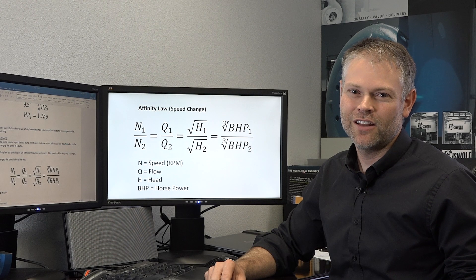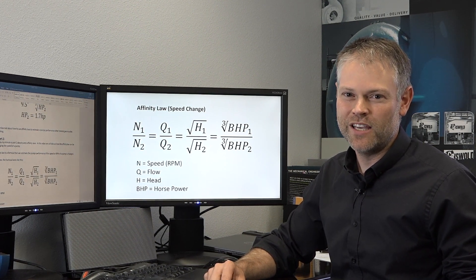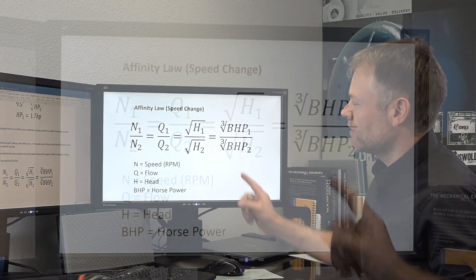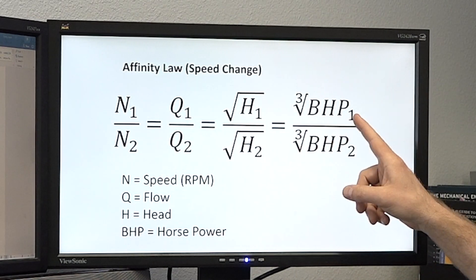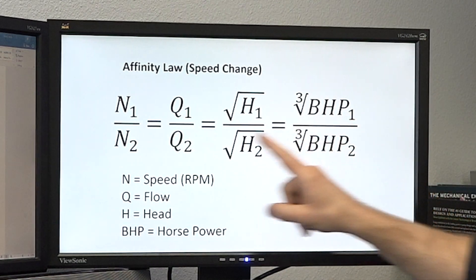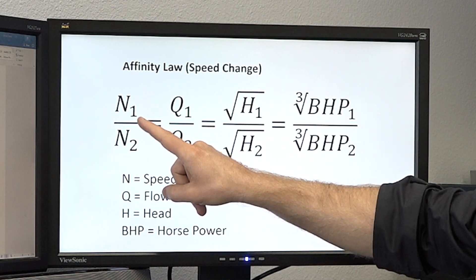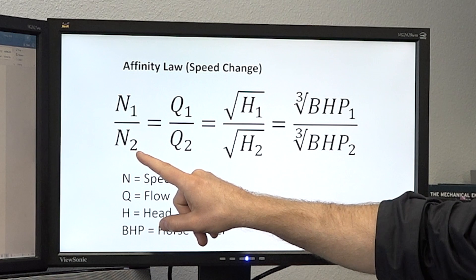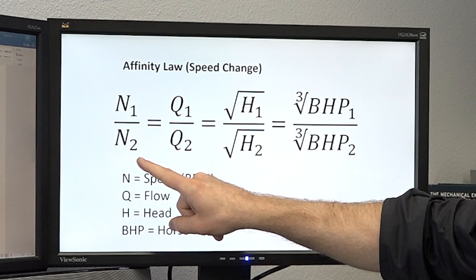The affinity law is a formula that can be used to predict pump performance when you change speed. And this is the equation. It has four elements: speed, flow, head, and horsepower. As you notice, the top of the equation has a subscript of one, that is your original pump speed. And the bottom of the equation has a subscript of two, that relates to your predicted performance after you change your speed.